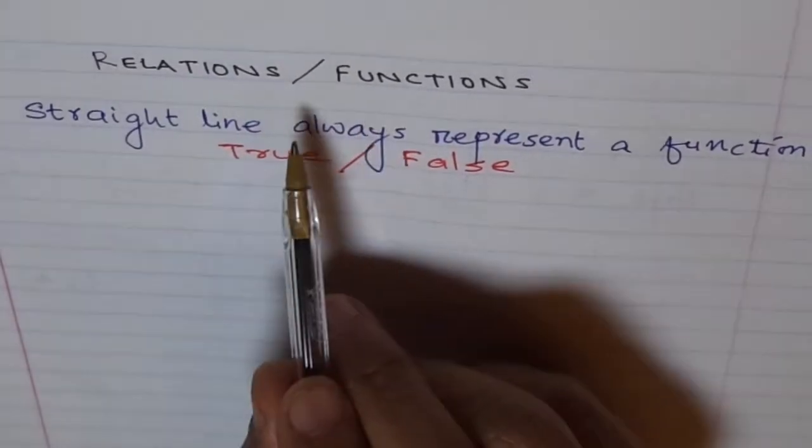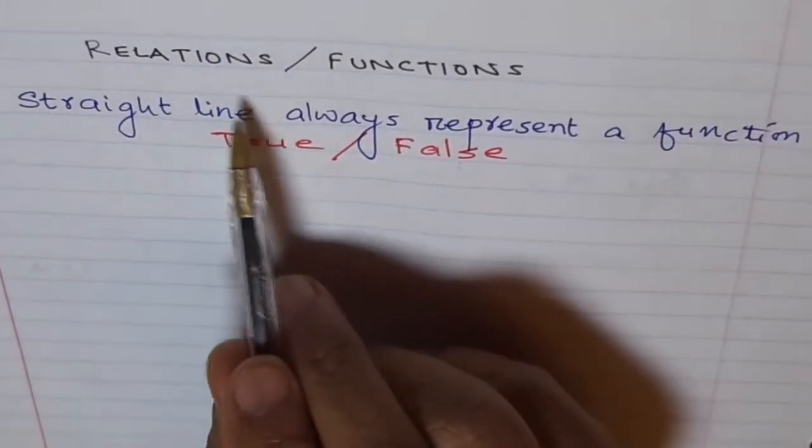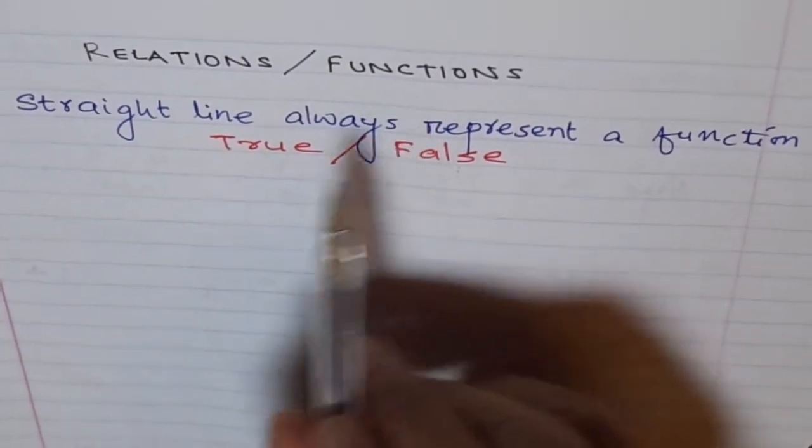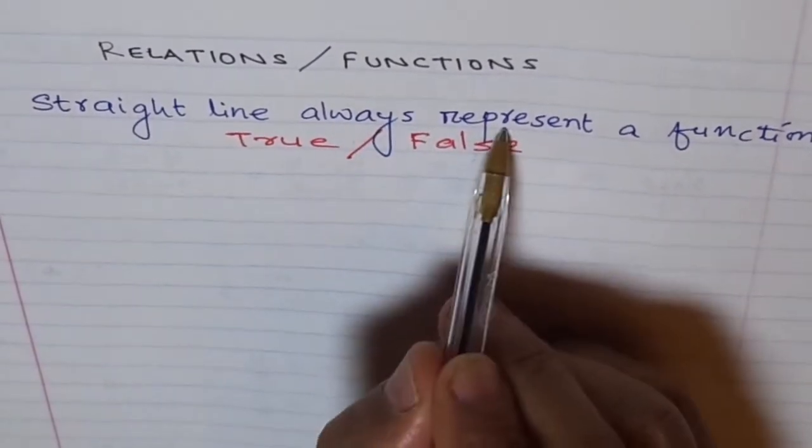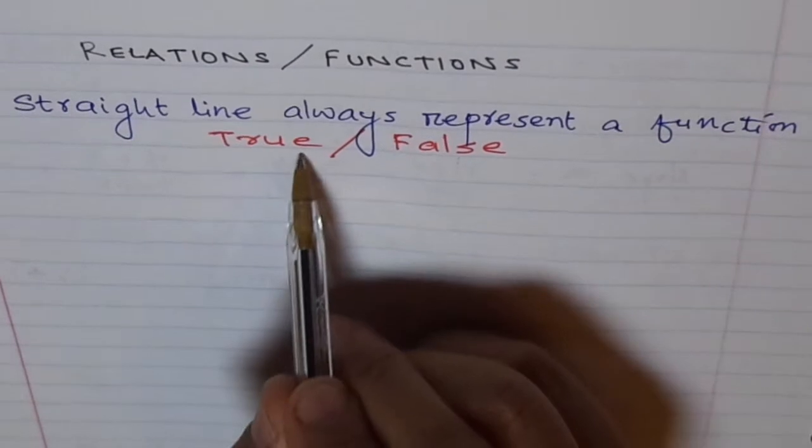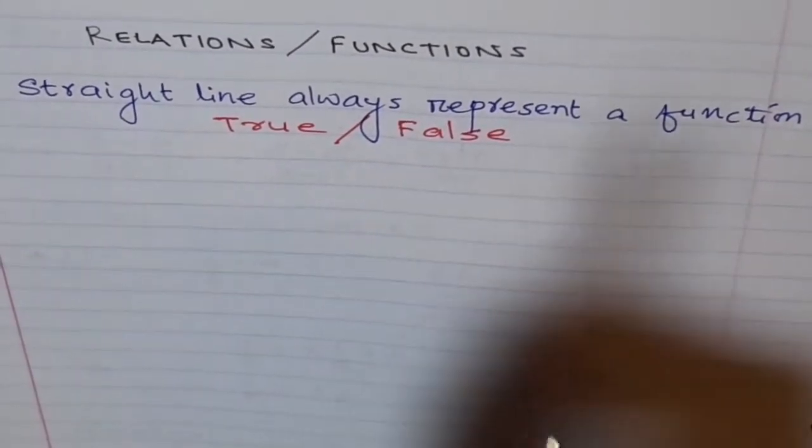I hope you remember the question I asked you during the relations and functions video. Straight line always represents a function. Is it true or false? This is very interesting.